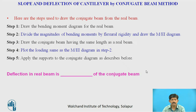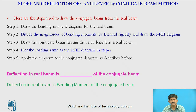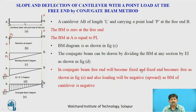So deflection in the real beam is the blank of the conjugate beam — here pause the video and try to write the answer on paper. Deflection in the real beam is the bending moment of the conjugate beam.